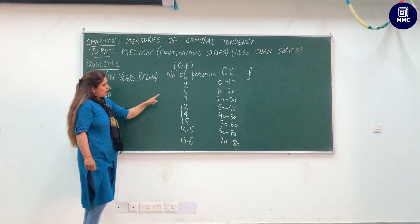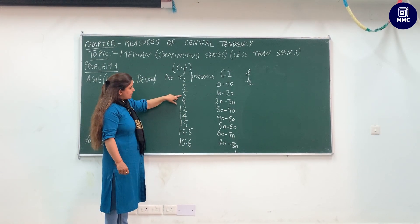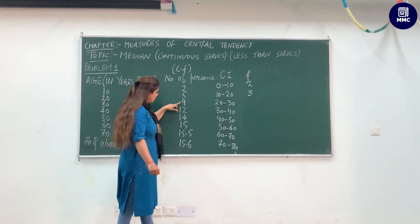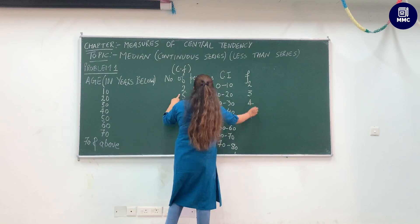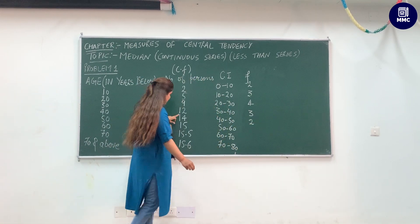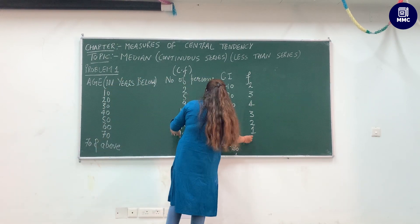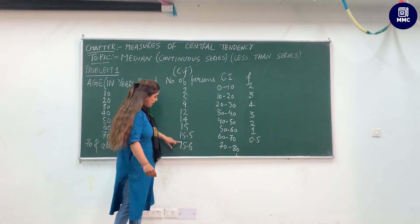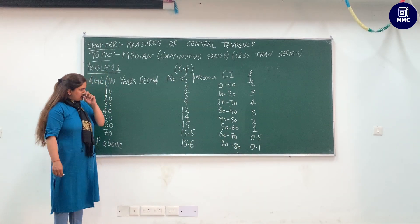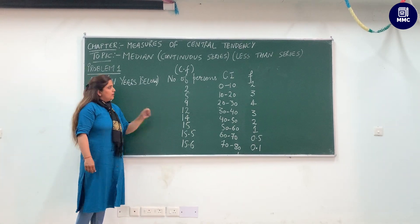To find frequency, the first number stays the same. For subsequent values, subtract consecutive CF terms: 5 minus 2 equals 3, 9 minus 5 equals 4, 12 minus 9 equals 3, 14 minus 12 equals 2, 15 minus 14 equals 1, 15.5 minus 15 equals 0.5, and 15.6 minus 15.5 equals 0.1. That completes class intervals and frequency calculation.